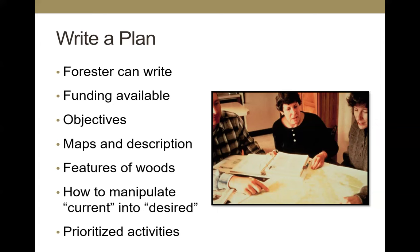If a state agency forester doesn't write your plan, there is funding available for a stewardship-type plan through federal cost share money through NRCS. In New York there's a more intensive plan called a tax law plan; other states will have something similar. I'm not certain if funding is available for the tax law plan or if it comes out of pocket — maybe there's a New York forester on the call who can answer that.